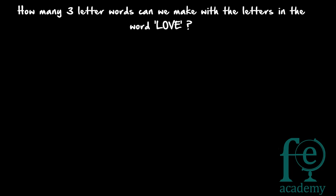Let's go to the second question: how many three-letter words can we make with the letters in the word LOVE? There are four letters - L, O, V, and E - and we need to find how many three-letter words we can make from this word, with or without meaning. LOV is one example, OVE or LVE likewise. There are four letters total and we are arranging three at a time, so this is also an arrangement - permutation applies, giving us 4P3.